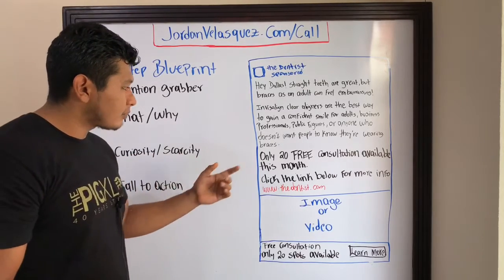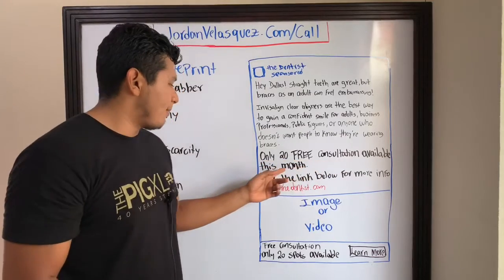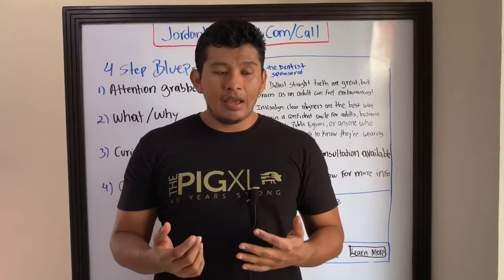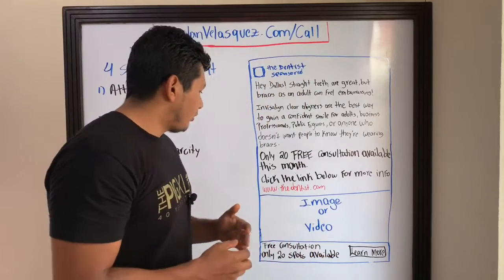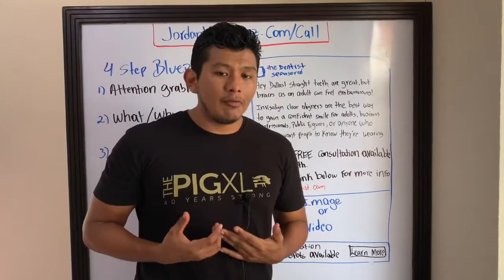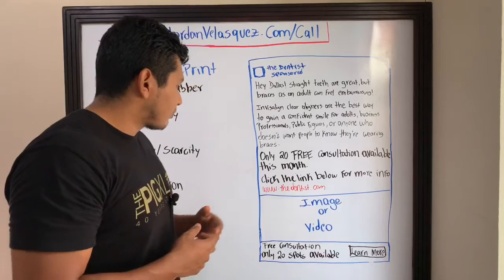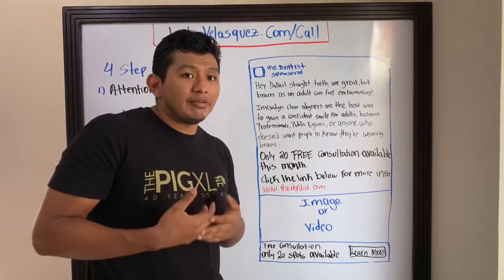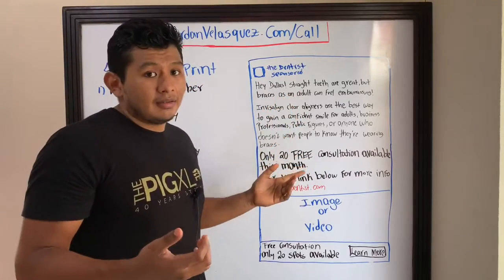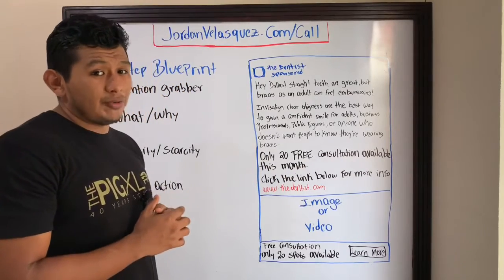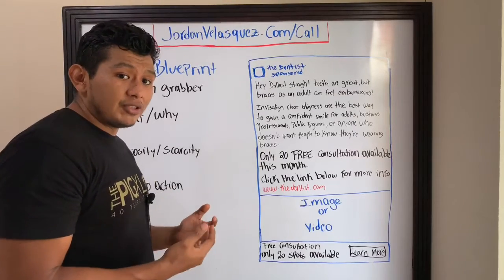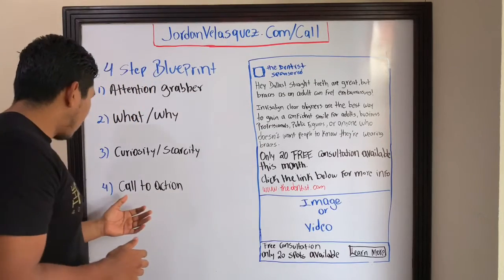Step three is curiosity or scarcity. For example: 'Only 20 free consultations available this month.' Ads perform best when there is limited availability or when FOMO — fear of missing out — is involved. We're human beings and we react on emotions. When we see limited availability, we don't want to miss the opportunity. Implement scarcity or curiosity whenever you can — it's really powerful.